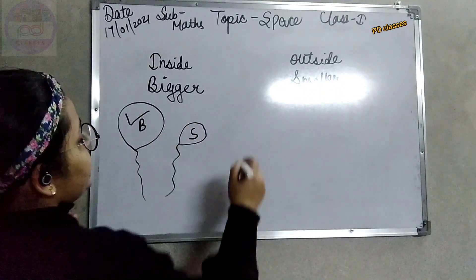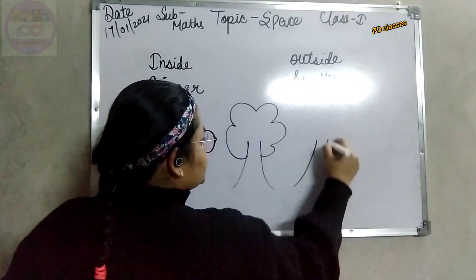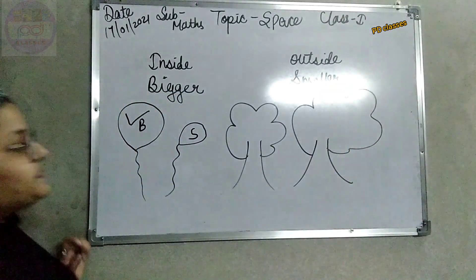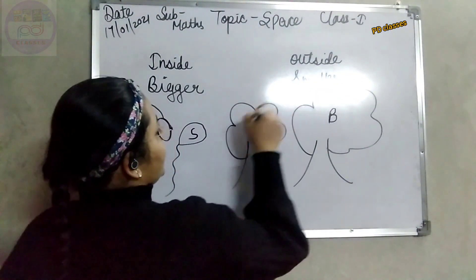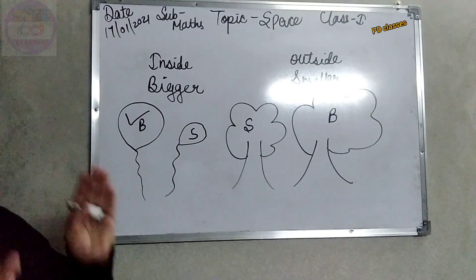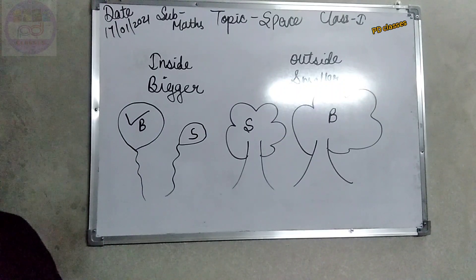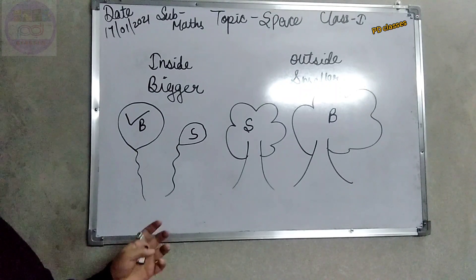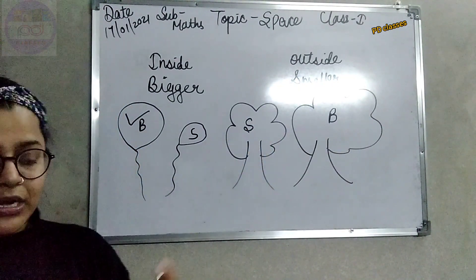Now tell me — in these two figures, which is the bigger one and which is the smaller one? The second one is the bigger one and the first one is the smaller one. What we have learned now: the thing whose size is comparatively bigger than the other one is known as bigger, and the smaller one is smaller.